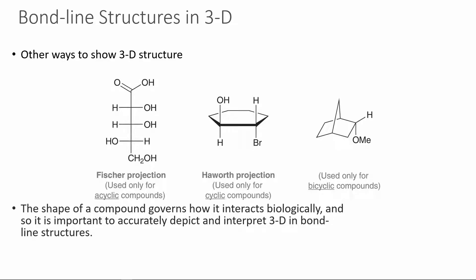There are a few other ways to represent molecules in three dimensions. On the left we have the Fischer projection. In the middle we have a Haworth projection, used only for cyclic compounds — the ring is flattened, with a hydroxyl group and hydrogen on the top face, and a hydrogen and bromine on the bottom face. With bicyclic compounds, we can see that a hydrogen is on the same side as the bridge, and a methoxy group is on the other side. The three-dimensional shape of these molecules has an extremely important impact on biological function.